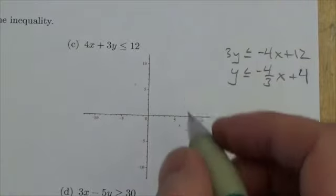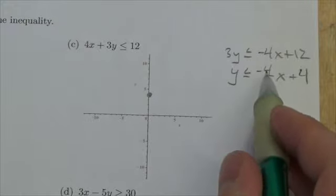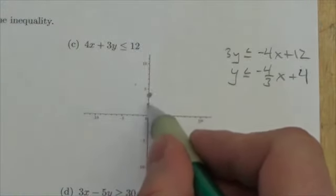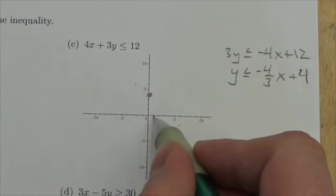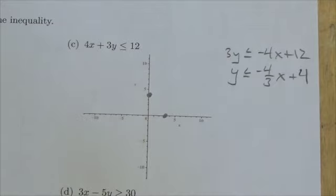My y-intercept here is 4, so I'll identify that on the graph, and my slope is negative 4 thirds. So that means from here I would go down 4—1, 2, 3, 4—puts me right on the x-axis, over 3—1, 2, 3. Okay, and there's my line here.